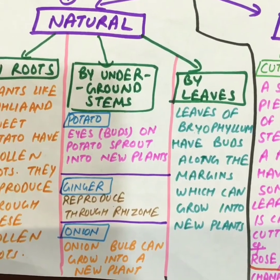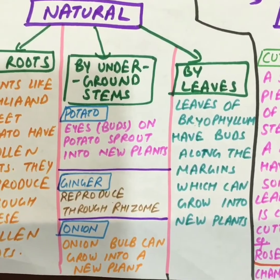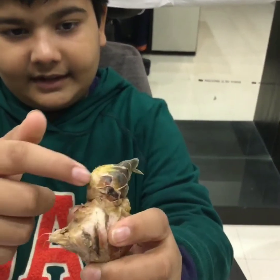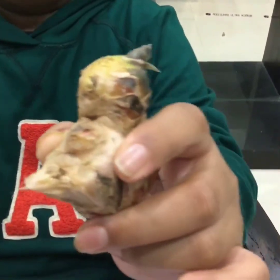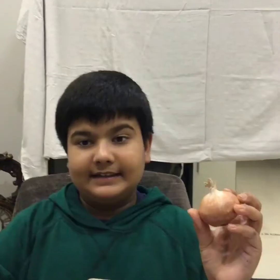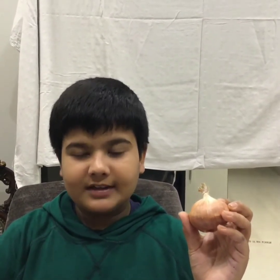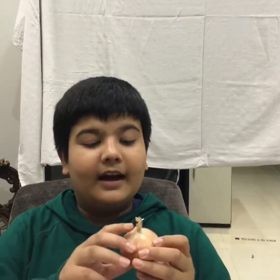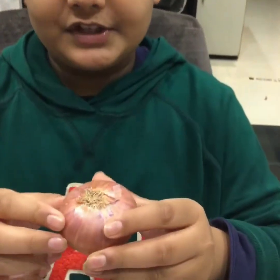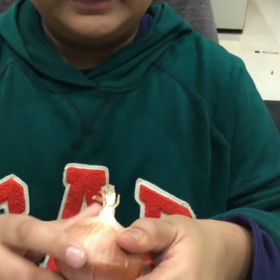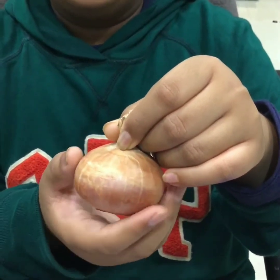Ginger reproduces through rhizome buds present on it — you can see the rhizome buds. The third plant which reproduces through underground stems is onion. Onion has bulbs on it through which it reproduces. This swollen structure is called the bulb of onion.